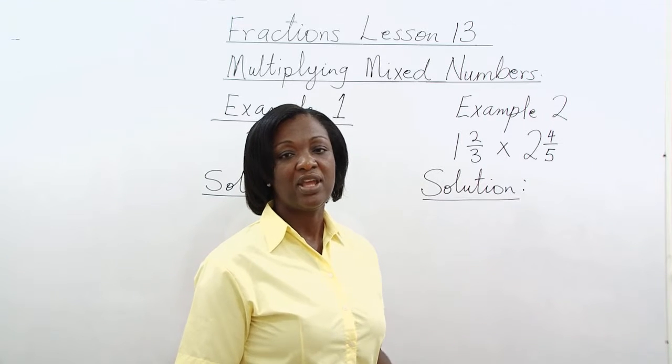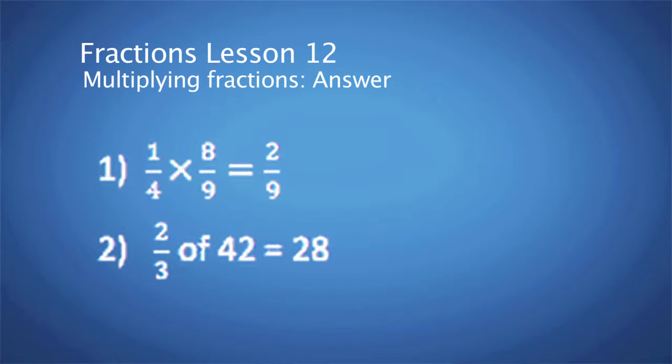Here are the answers. Question 1: 1 quarter times 8 over 9 is equal to 2 over 9. Question 2: 2 thirds of 42 is equal to 28.